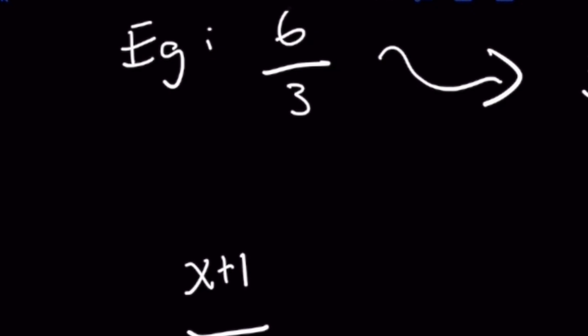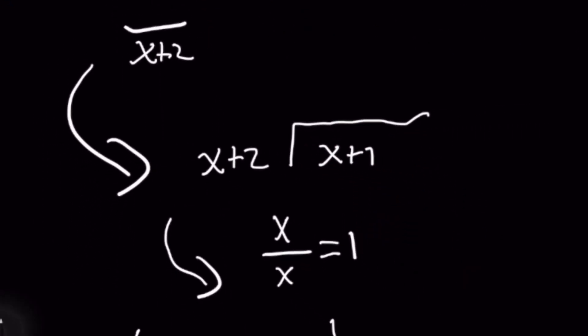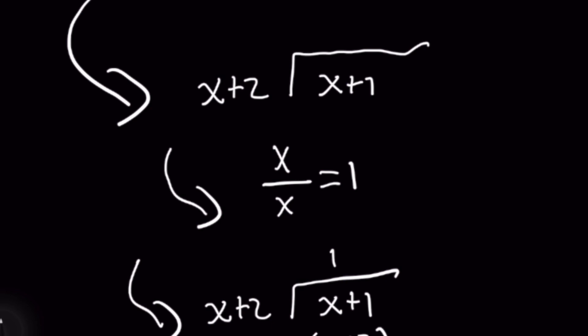x plus 1 would go on the inside which is going to be your dividend and it's the same idea but in this case what we do is we take the greatest term in terms of the power of x for both the divisor and dividend. I like to actually divide them first as a fraction to see what the quotient is going to be and we see that x goes into x one time.